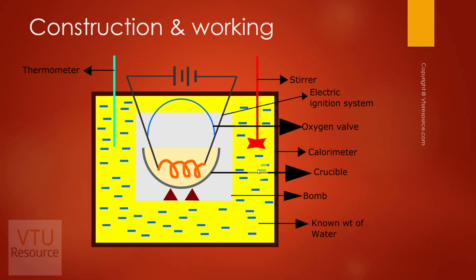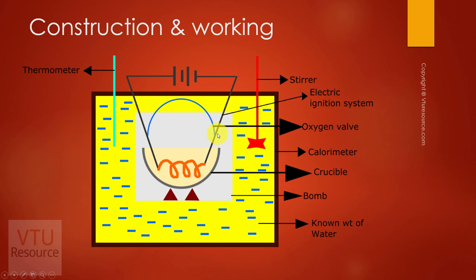Let us discuss the construction and working. Bomb calorimeter consists of a platinum or ceramic crucible in which a known weight of solid or liquid fuel is taken. This crucible is mounted in an airtight stainless steel vessel, which is known as the bomb. The bomb is equipped with an oxygen valve because oxygen is essential for combustion of any type of fuel.